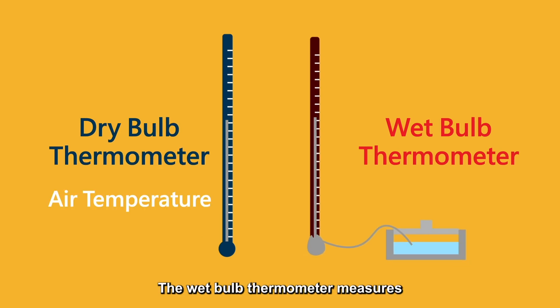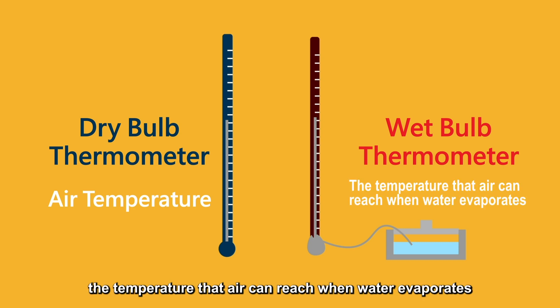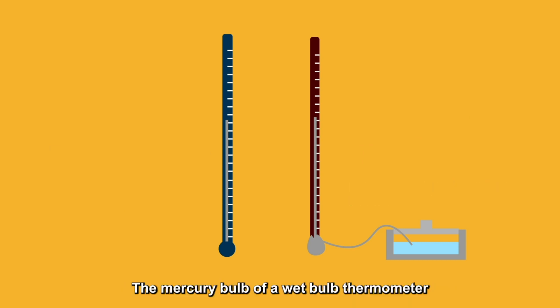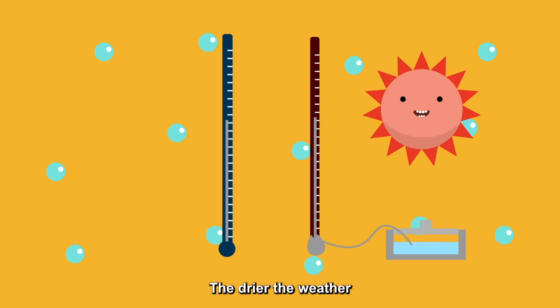The dry bulb thermometer measures the air temperature directly. The wet bulb thermometer measures the temperature that air can reach when water evaporates. The mercury bulb of a wet bulb thermometer is wrapped in a wet cloth. As the water vapor in the air isn't saturated, the water around the wet bulb will evaporate. When water evaporates into the air, it takes away heat energy and causes the wet bulb temperature to drop. So, the temperature will change according to the degree of water evaporation on the wet cloth.